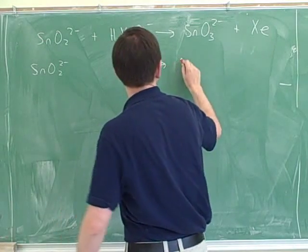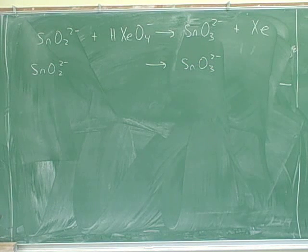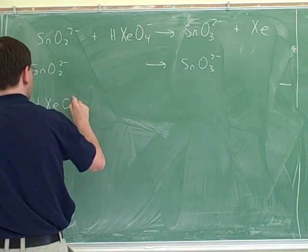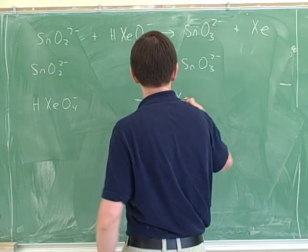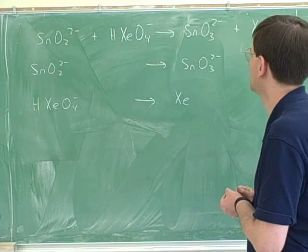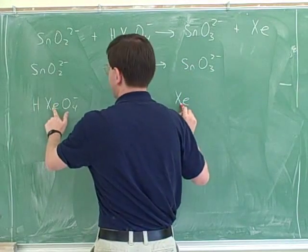Because we need first to start with Sn, but because they're the same we don't do any coefficients yet. So first you separated this into two half reactions. Yeah, into two half reactions and we need to—the tins are already balanced and the xenons are already balanced.